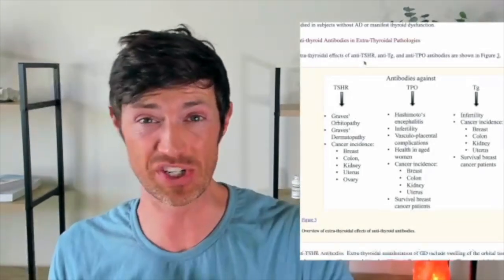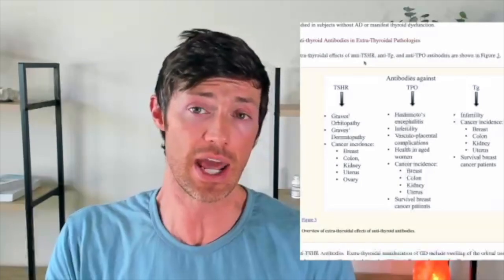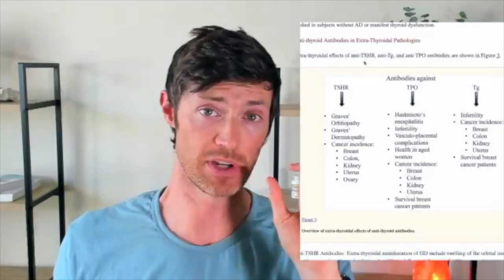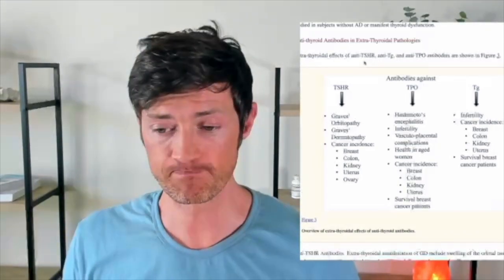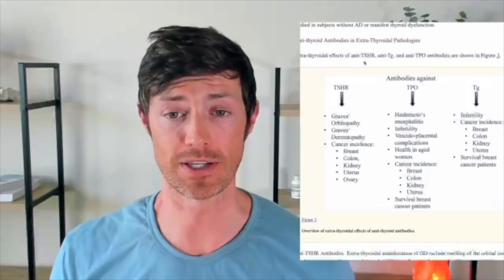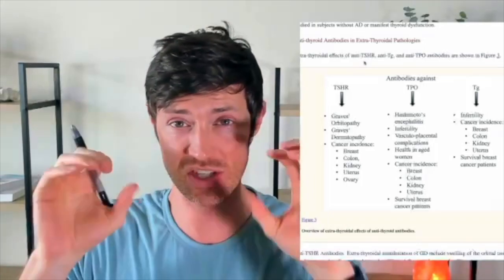Now let's talk about TSH-R, which stands for TSH receptor antibodies. This antibody is frequently seen in patients who have Graves'. It's worth pointing out that both autoimmune conditions — Hashimoto's and Graves' — are very similar. Even though they result in completely opposite conditions, with Hashimoto's tending to result in hypothyroidism and Graves' tending to result in hyperthyroidism, they are very similar at their core. The extra-thyroidal conditions associated with TSH receptor antibodies include Graves' orbitopathy, which is an eye disease — the bulging of the eyes that patients with Graves' tend to experience — and that is more mediated by the immune system, not by the thyroid.